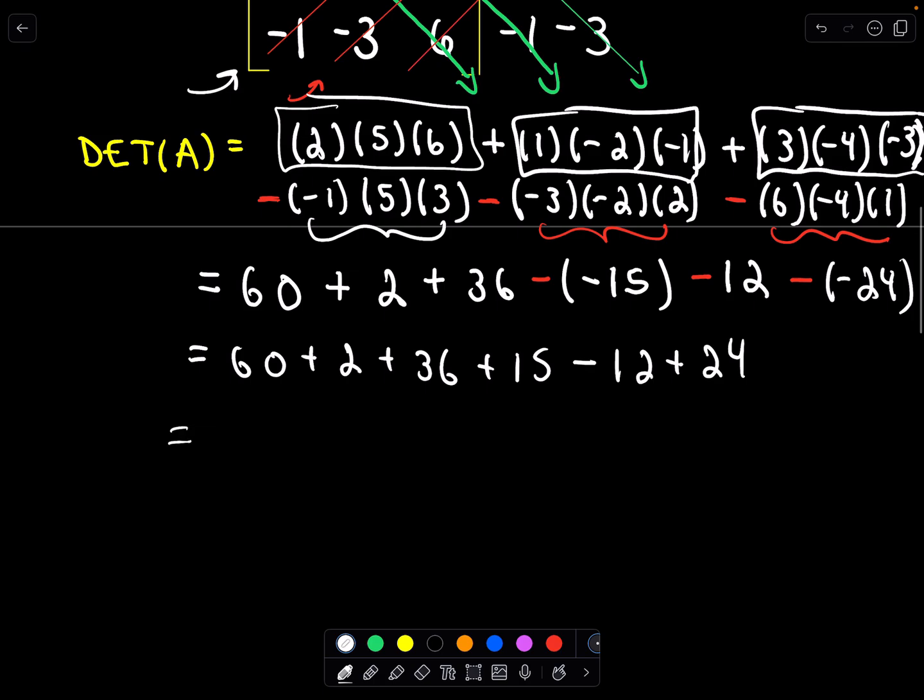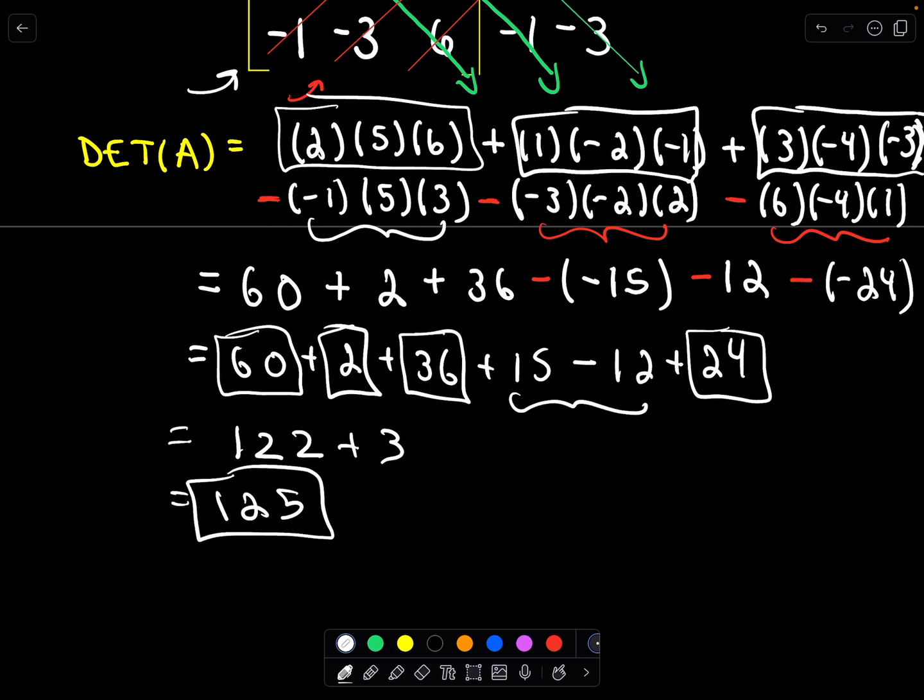Okay. So let's see. I would probably do 36 and 24. That's going to give me 60. Plus another 60 is going to give me 120. Plus 2, that's going to be 122. And these next two values, 15 minus 12, that's going to be plus 3. So I'm getting 125 as my determinant.